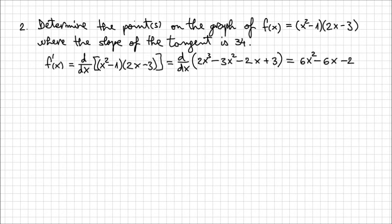The 3, it's a constant, so plus 0. We're not going to write that. So f'(x) is equal to this expression, 6x² - 6x - 2.